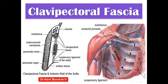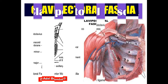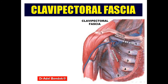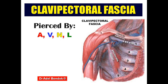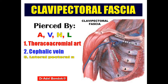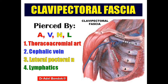It is called the costocoracoid membrane because it is attached medially to the first costal cartilage and laterally to the coracoid process. This clavipectoral fascia is pierced by four structures: the thoracoacromial artery, the cephalic vein, the lateral pectoral nerve, and lymphatics.